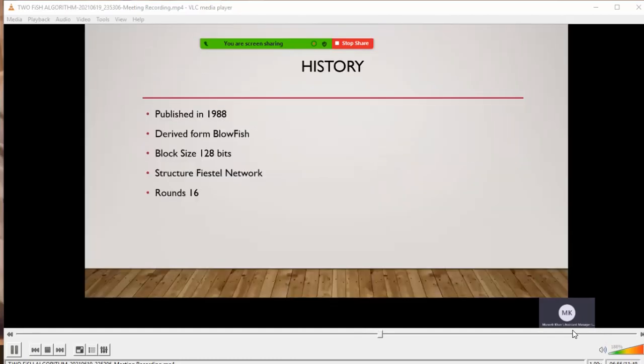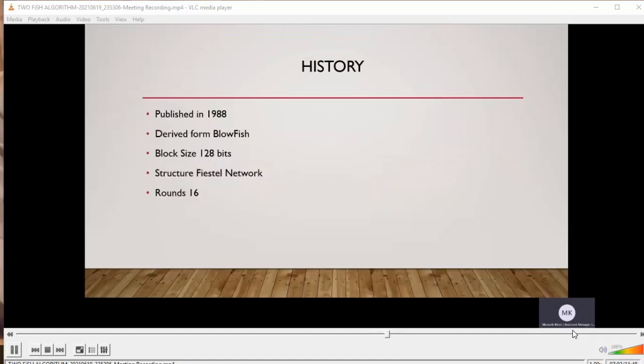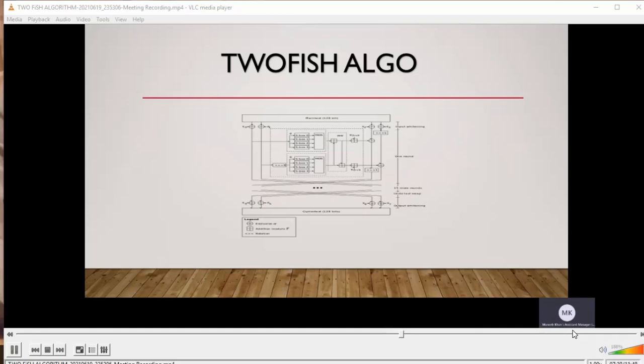We need to understand what is Twofish algorithm, who created and developed it, what is the block size, what is the structure of this algorithm, and how many rounds - 16 rounds. Twofish is a symmetric key block cipher. Now the algorithm - it's very interesting. You can see it's an algo and how it's designed. It looks very complicated to be honest. When I first started to understand it, I wasn't able to totally understand what exactly Twofish algorithm is, although I have read a lot about how it operates and works.